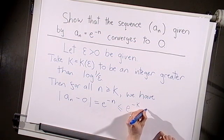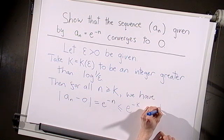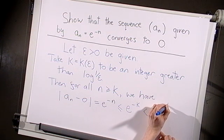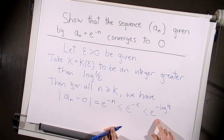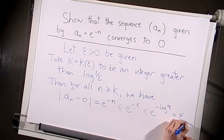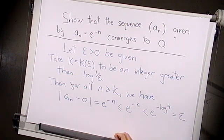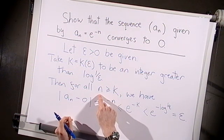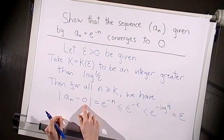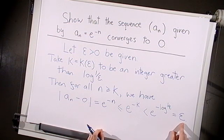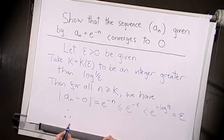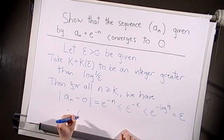The reason I chose k in the way that I did is precisely to make this last expression less than epsilon. By choosing k greater than log of 1 over epsilon, e to the minus k will be less than e to the minus log of 1 over epsilon, and this last term is precisely equal to epsilon. So I've shown that by choosing n large enough, the distance between a_n and zero is less than epsilon, and this works for any positive epsilon. We've therefore shown that the sequence satisfies the definition of convergence to zero, and so the sequence a_n does indeed converge to zero.